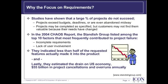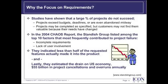Over the years, numerous studies have been conducted to try and determine why IT is not successfully delivering projects. A rather infamous and often referenced survey called the KS Report, conducted by the Standish Group every two years since 1994, has continually listed incomplete requirements and lack of user involvement as the top factors most frequently contributing to project failures. In 1995, Application Development Trans Magazine had an article called The Dollar Drain of IT Project Failures, which referenced the 1994 KS Report and concluded that the top two reasons projects were canceled were incomplete requirements and lack of user involvement.